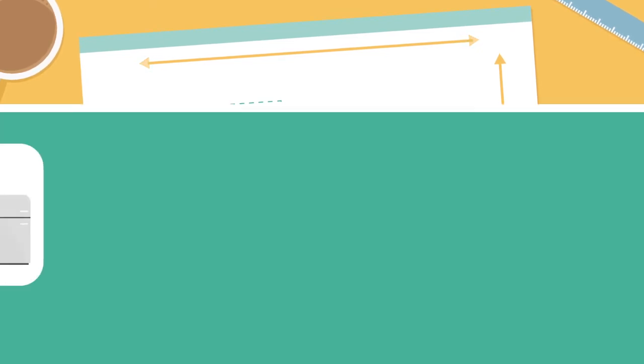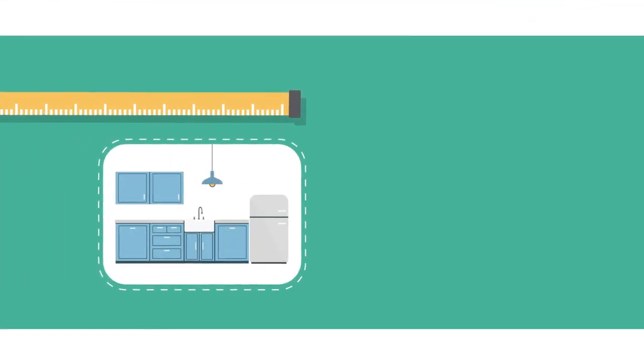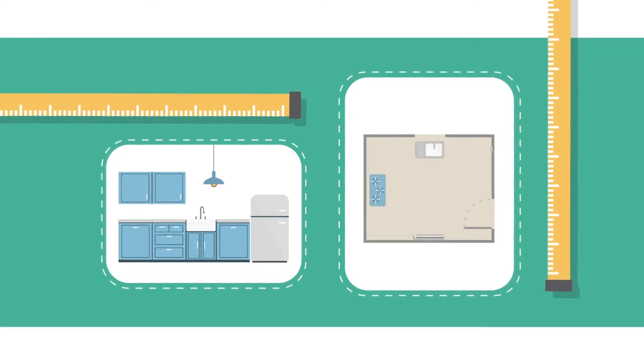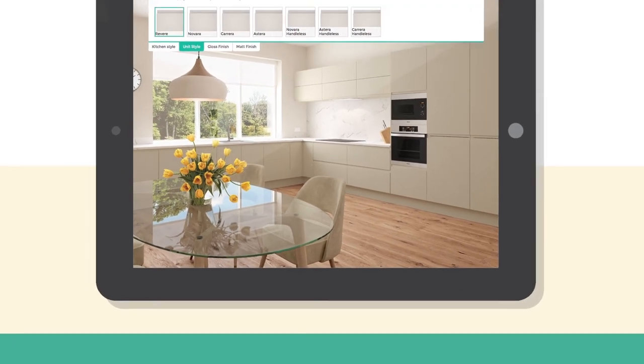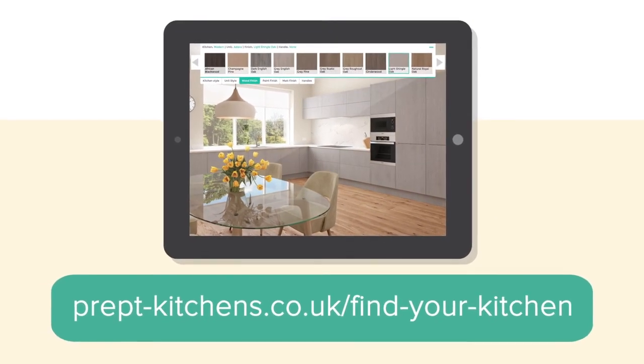Now that you know how to accurately measure your kitchen space and lay out the key fixtures in a way that works best for you, head over to our video on how to expertly install your fitted kitchen. Not quite there yet? Not to worry. Our kitchen visualiser tool will help you to design your dream kitchen until you're 100% happy with the end result.